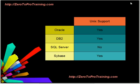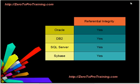This slide shows if the databases support atomicity, consistency, isolation, and durability. Here is a referential integrity support comparison. Here is a transactions support comparison. Here is a Unicode support comparison. This slide lists the interface support.